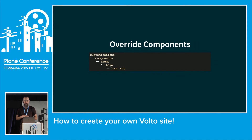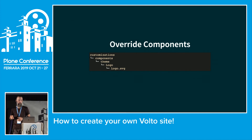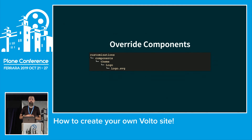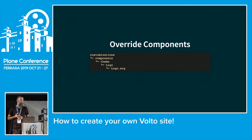Next up: overriding components. The customization folder works like jbot — if you match the folder structure used in Volto, you can overwrite that specific file. In this case we're overriding the logo SVG, but it works exactly the same with JavaScript files or any other files in Volto. Just put the file there and it will act like it's actually in the Volto package.